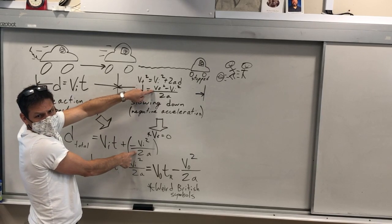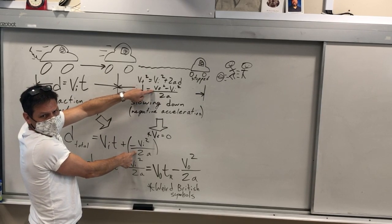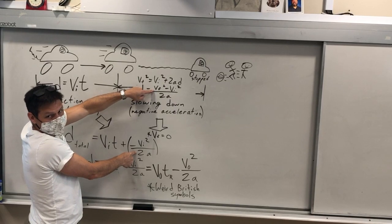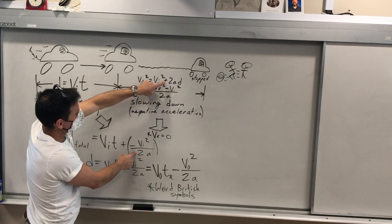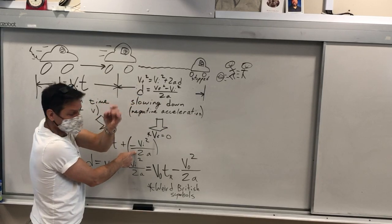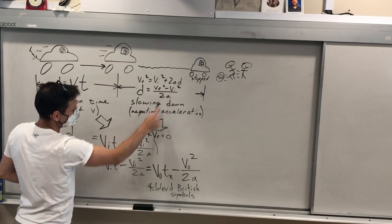What happened to the VF, Thomas? V equals zero. Exactly. If you do get stopped, your VF must be zero. So VF squared is zero, we just leave the negative VI squared over 2A, and that comes here.